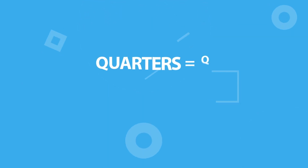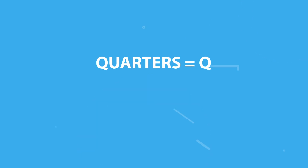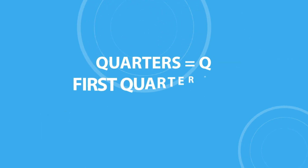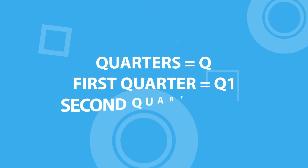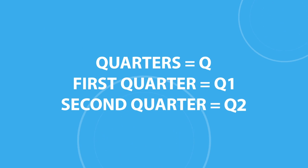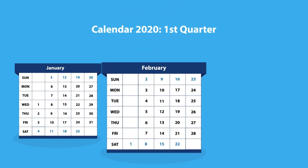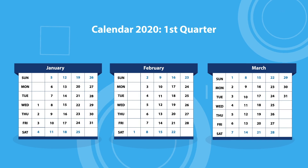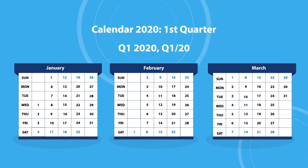Quarters are typically expressed as Q followed by the quartile number. The first quarter is Q1, the second quarter is Q2, and so on. Quarters may also be represented along with their relevant year, as in Q1 2020 or Q1/20.